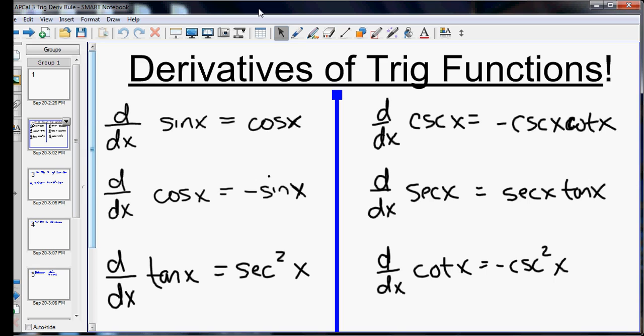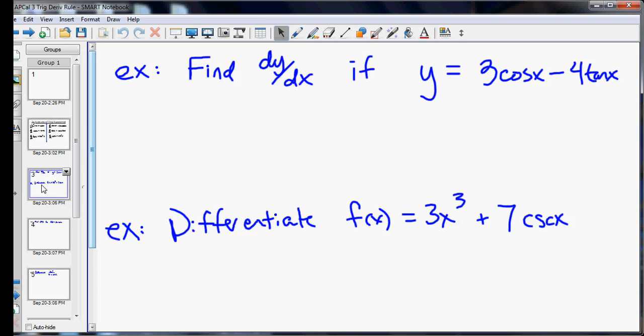So let's try this out. First of all, find the derivative if y equals 3 cosine x minus 4 tangent x.